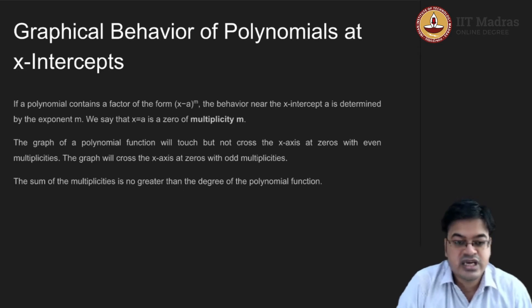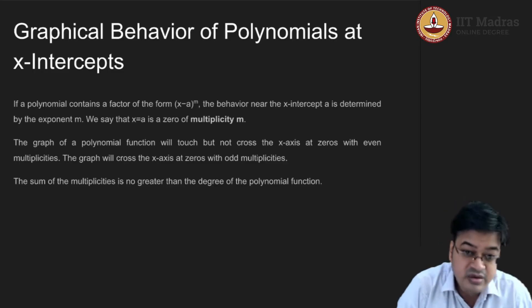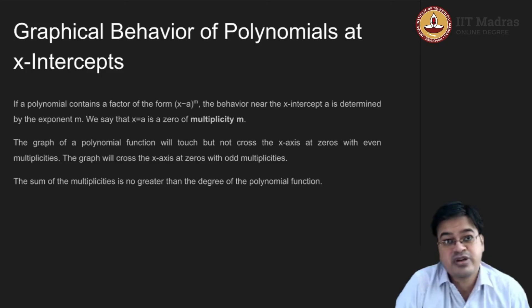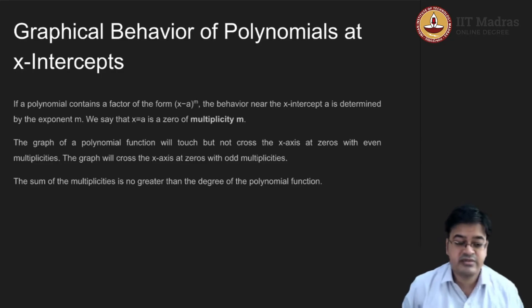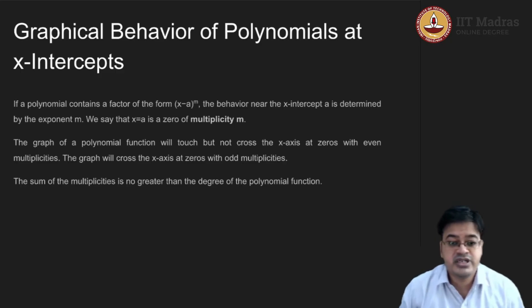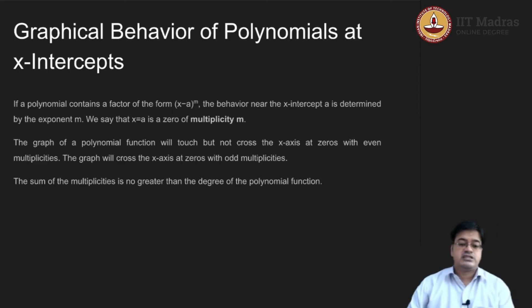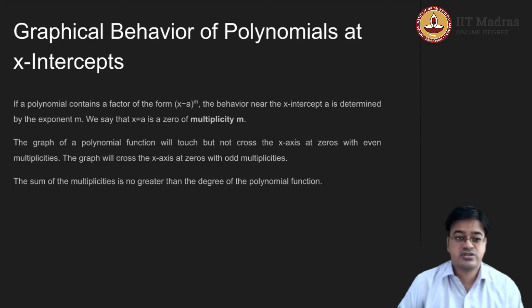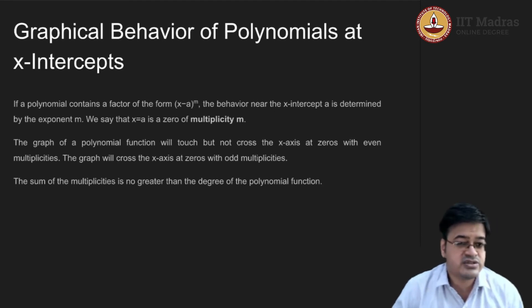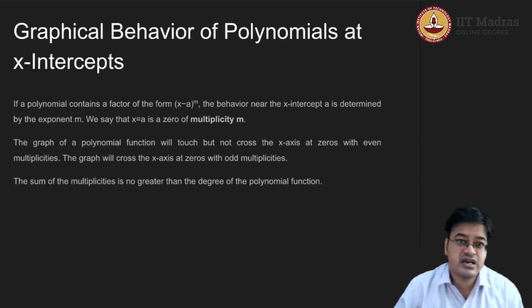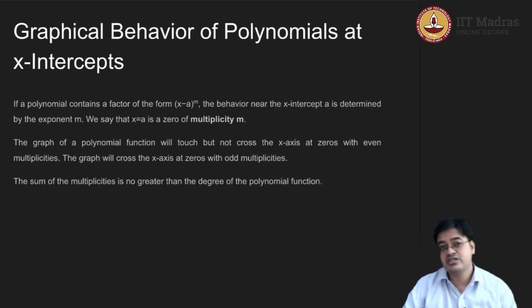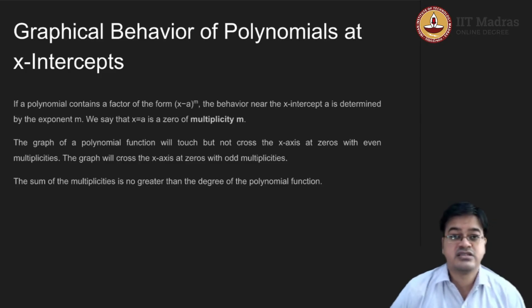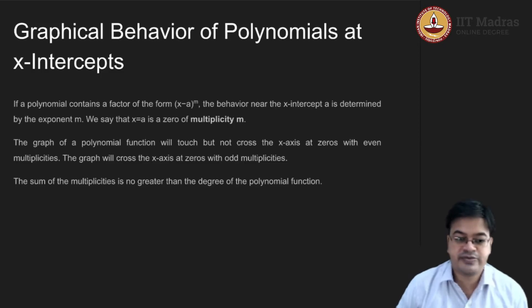If the sum of multiplicities exceeds the polynomial degree, then it would be a polynomial of higher degree. The sum of multiplicities will always be equal to the degree only when all roots are real. All x-intercepts are real roots, but as in the quadratic case, some polynomials do not have real roots. In such cases, the x-intercepts are not visible.